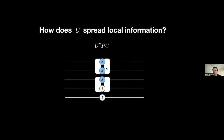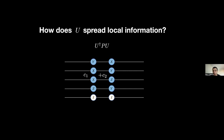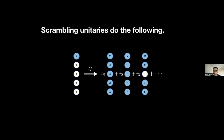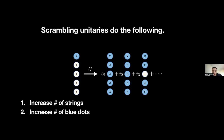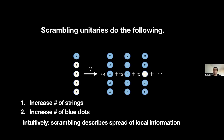Not only that, but when we evolve with our unitaries, we can also map from one Pauli string to two. If we keep evolving with more layers, eventually we get a mapping that looks like this: starting off with a local Pauli string, U maps it to a sum of strings. Two things are happening: U increases the number of strings on the right-hand side to some large number, and it also increases the number of blue dots per string to be large. Unitaries which do this are referred to as scrambling unitaries, and intuitively scrambling describes the spread of local information.